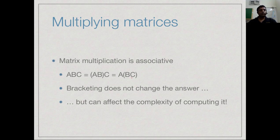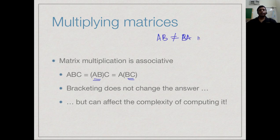The concern is now computing the product of three or more matrices. When multiplying A, B, and C, we cannot multiply all at once — we must either compute (AB)C or A(BC). Matrix multiplication is not commutative in general, so the order must stay the same. However, it is associative, meaning either bracketing gives the same final answer.